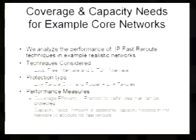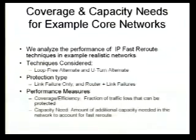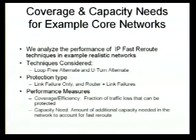We specifically consider two types of IP fast reroute mechanisms. One is one of the simplest ones, the loop-free alternate, and the second one is what Elia pointed out as medium complexity: the U-turn alternate. The kinds of failures we look at is a pure link failure — we assume that when you detect a local failure, it is a link failure, and use our alternate next hop based on that.